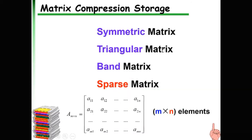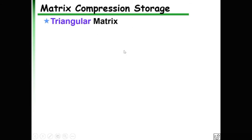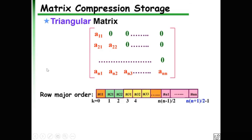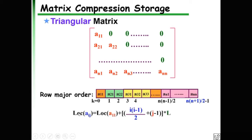The second special matrix is the triangular matrix, where all elements in the upper triangle are zero (or the lower triangle). It can be compressed in the same way as a symmetric matrix. Following row-major order, we use a formula to calculate the location of any element.